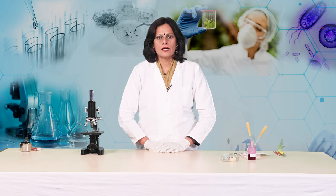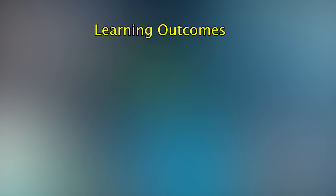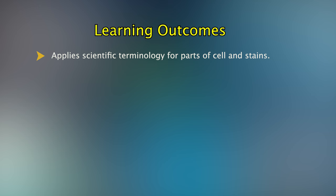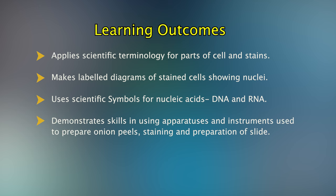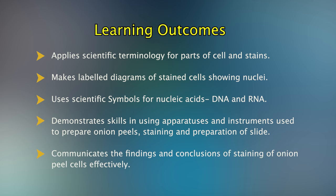This practical exercise will help you to achieve following learning outcomes. Applies scientific terminology for parts of cells and stains. Makes label diagrams of stained cells showing nuclei. Uses scientific symbols for nucleic acids that is DNA and RNA. Demonstrates skills in using apparatus and instruments used to prepare onion peels, staining and preparation of slide and communicates the findings and conclusions of staining of onion peel cells effectively. Thank you.